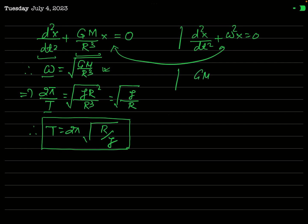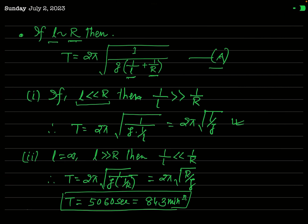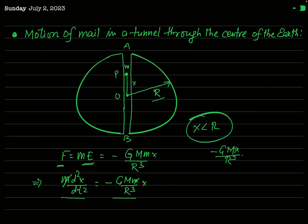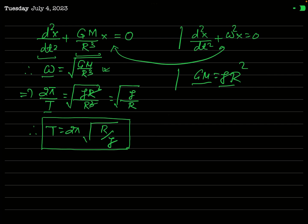Since GM = gR² (from surface gravity), substituting gives 2π/T = √(gR²/R³) = √(g/R). Therefore T = 2π√(R/g). This is exactly the same expression as for the infinite-length pendulum. So the time period of oscillation of the particle about the center of the earth through the tunnel is also 84.3 minutes.